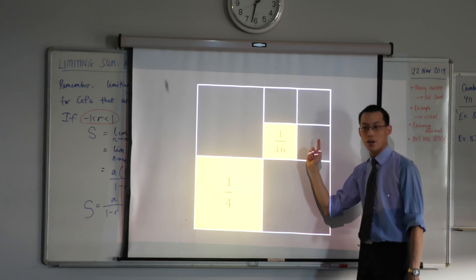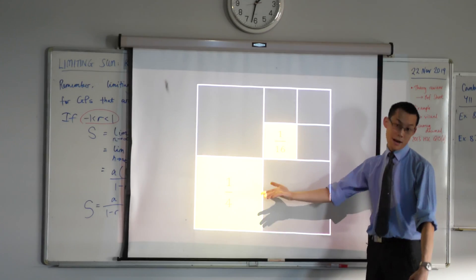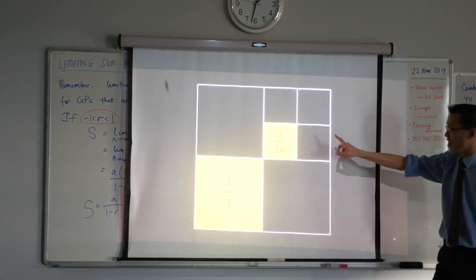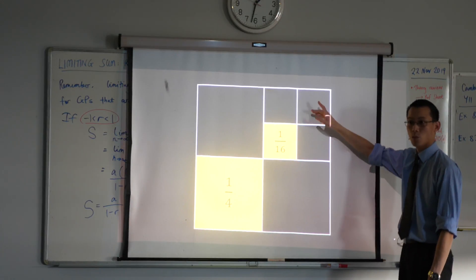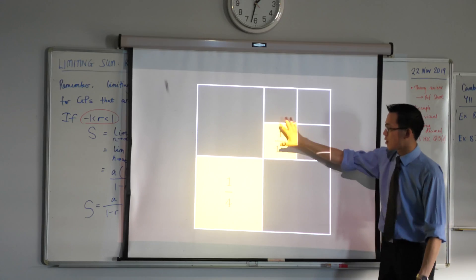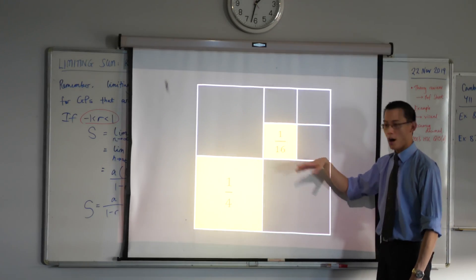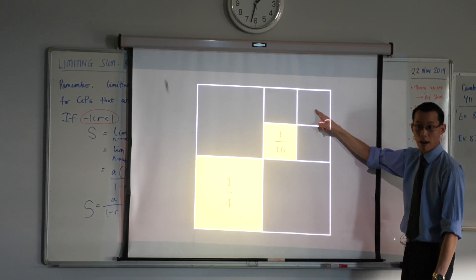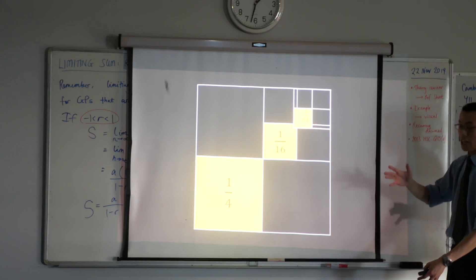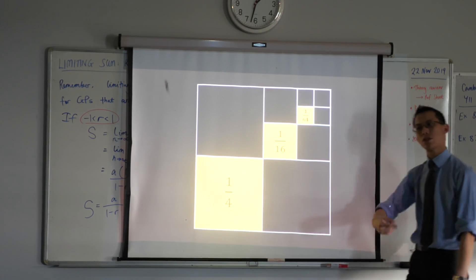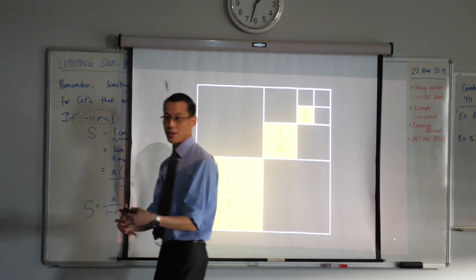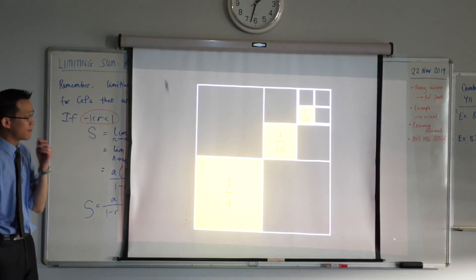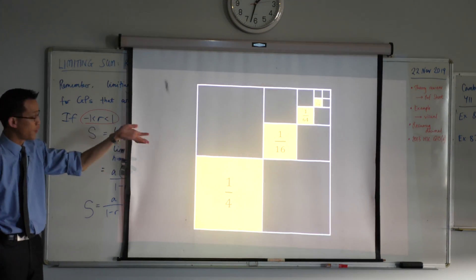So this is just the first two terms in our partial sum. Now once I realize I've got this pattern set up, if I want to continue, the next one's one over 64. If this is a quarter of a quarter, then one over 64 is a quarter of a quarter of a quarter, right? So I can just sort of keep on going, further and further and further.